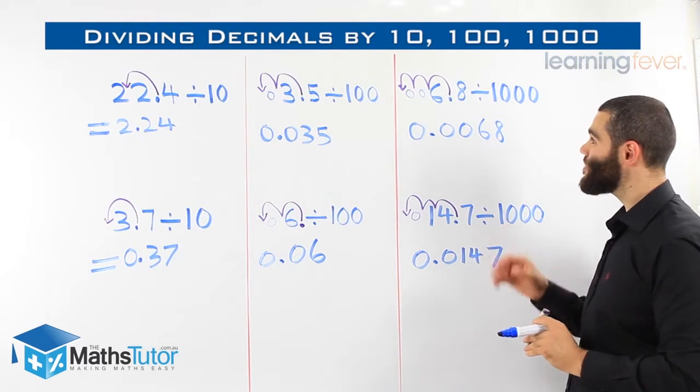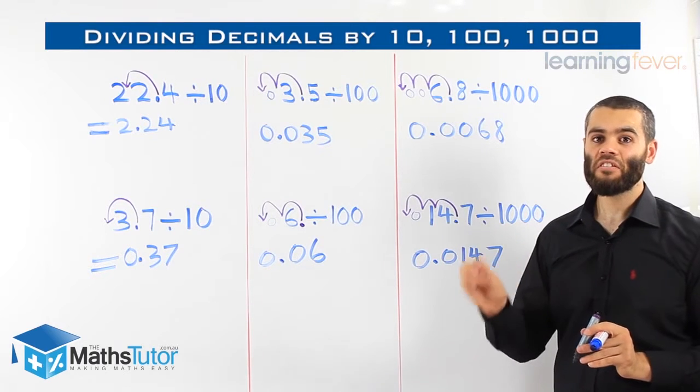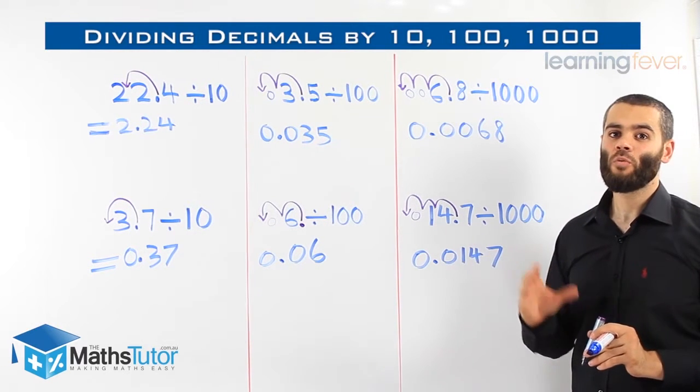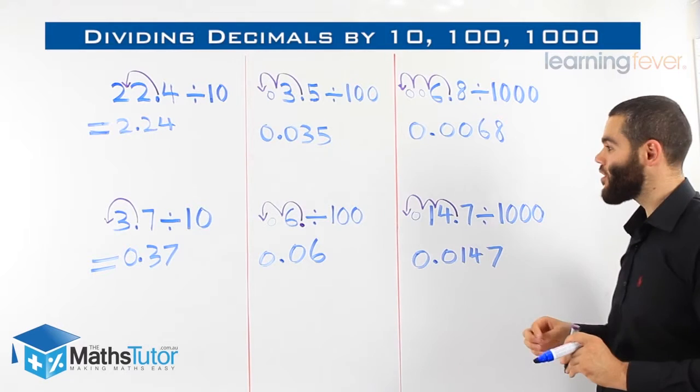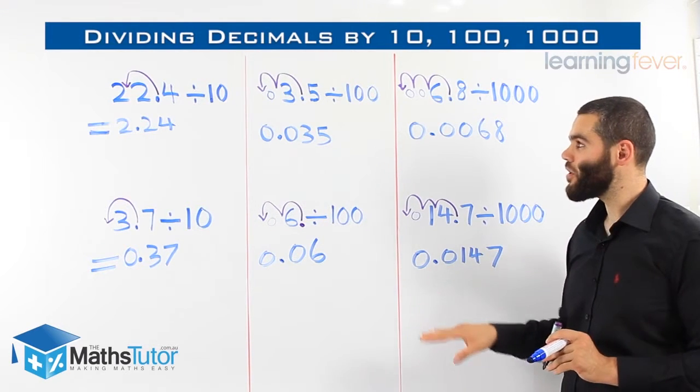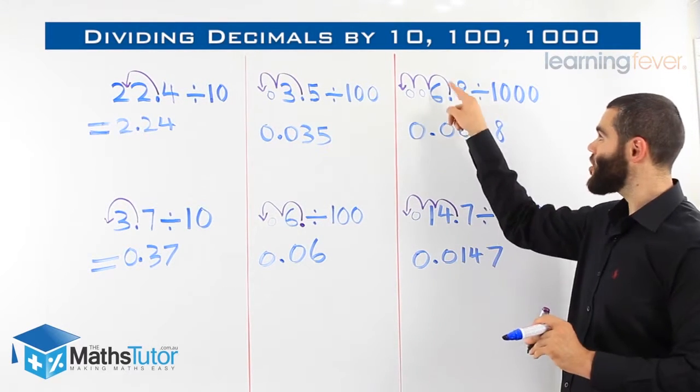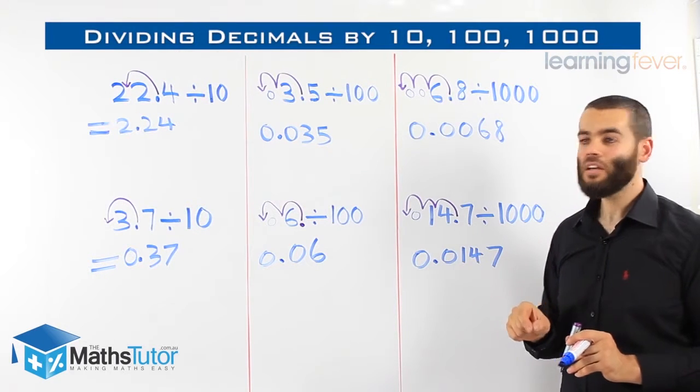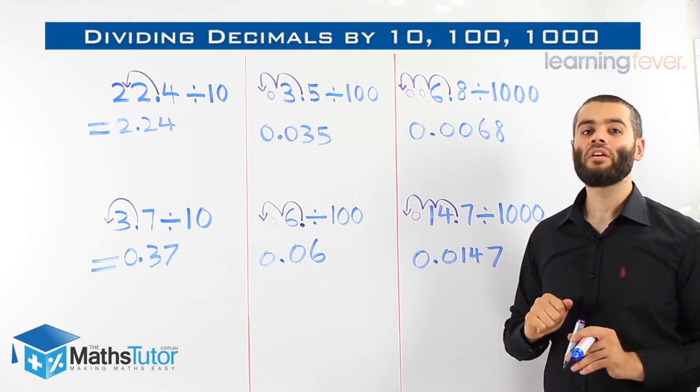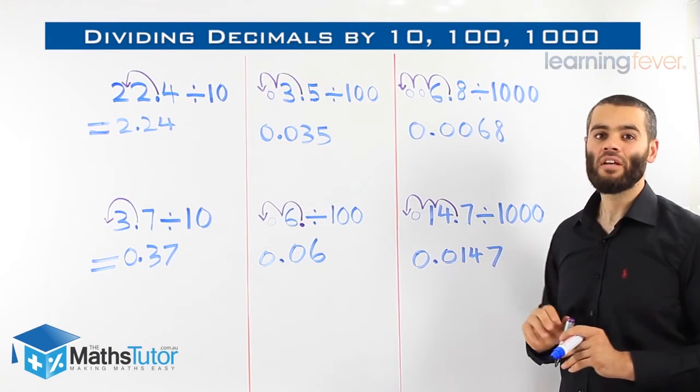So as you can see, it's very similar to the multiplication, except we're going to the left. With multiplication, we're going to the right. Easy, straight to the point, follow the procedure. Always show your arrows, that way you understand and you won't make a mistake, and you'll get everything correct, just like I do here.